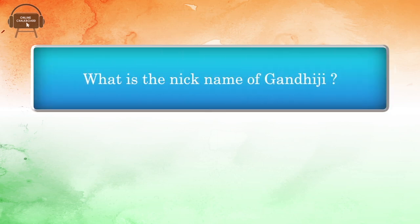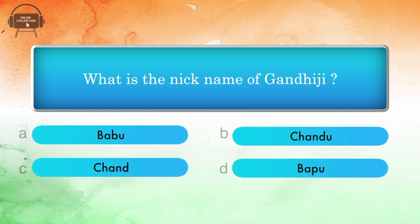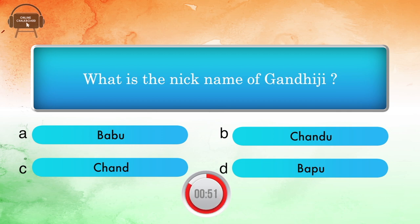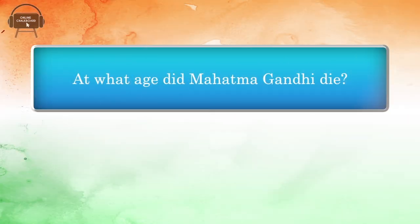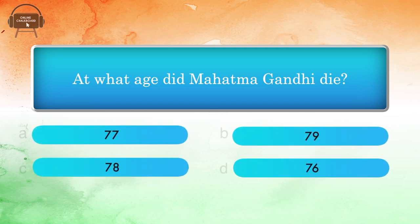What is the nickname of Gandhiji? Options: Babu, Chandu, Chand, Bapu. Answer: Bapu. At what age did Mahatma Gandhi die? Options: 77, 79, 78, 76.